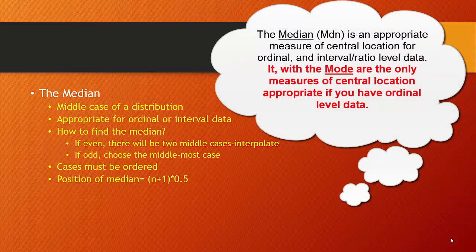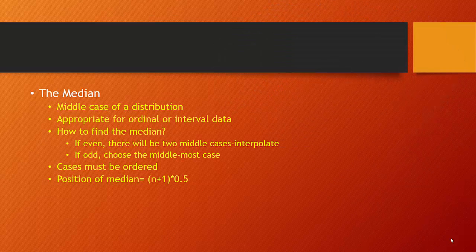The median, or the middle case in the distribution, is appropriate for ordinal and interval level data. To find the median, we need to determine the number of cases we have. If we have an even number of cases, we sort them in ascending order and average the middle two. If we have an odd number, we find the one in the center. The definition of the median is the point where half your observations are above and half are below.